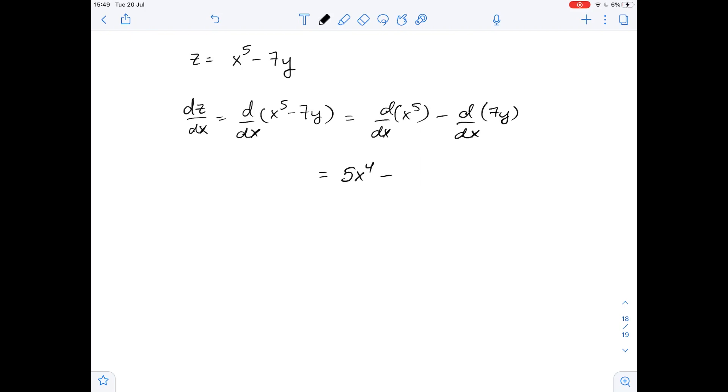The derivative of 7y with respect to x equals 0 because we treat y as a constant. So the derivative of z with respect to x equals 5x^4.